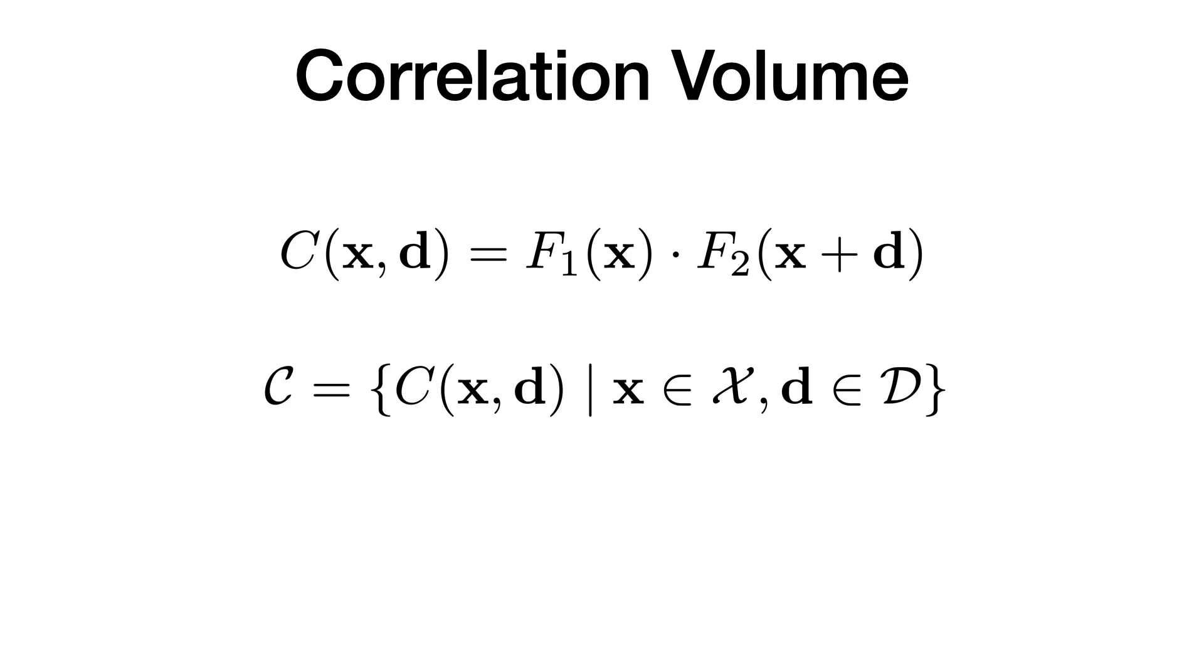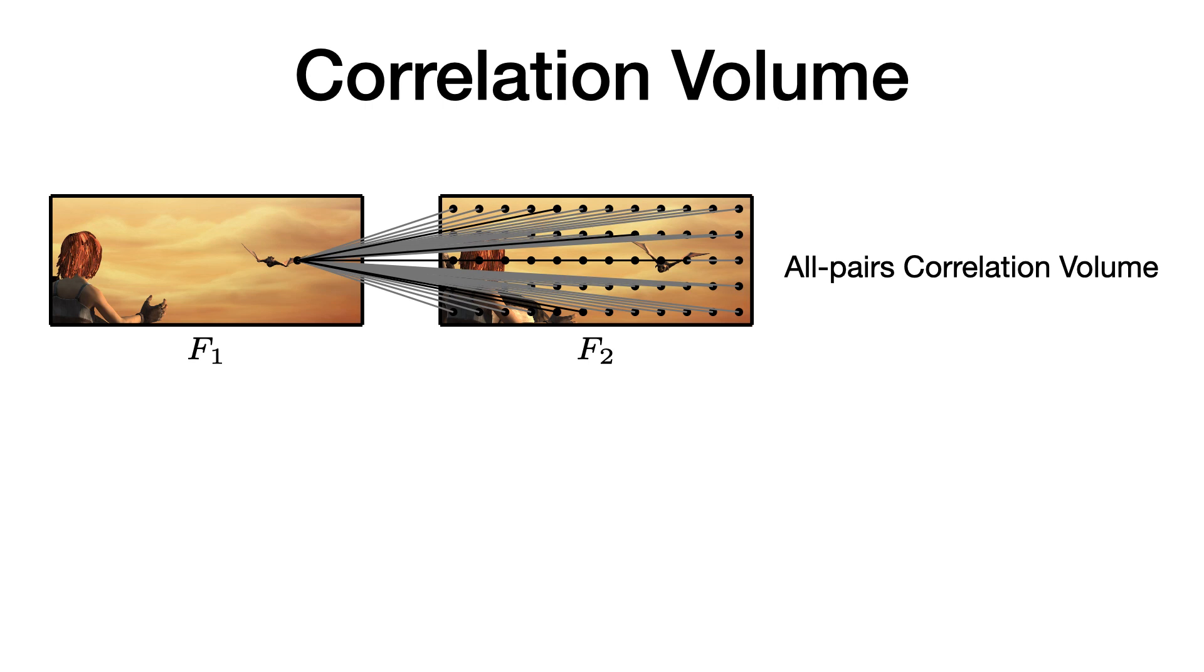To solve the optical flow problem, we want to know where each pixel moves to, and the correlation volume gives an explicit representation for pairwise similarities. To successfully handle large motions, the recent paper RAFT proposed to use the all-pairs correlation volume.